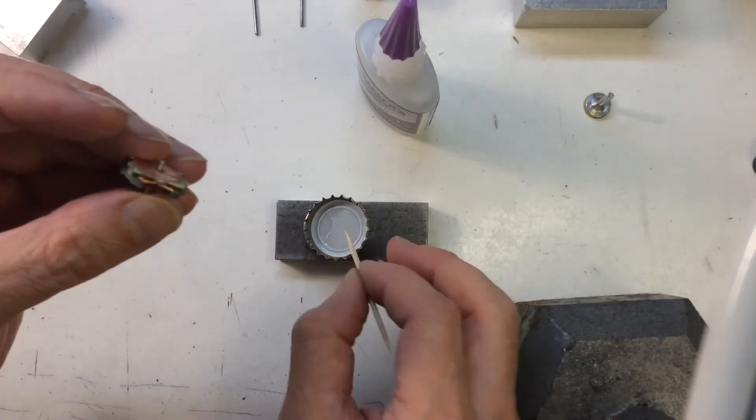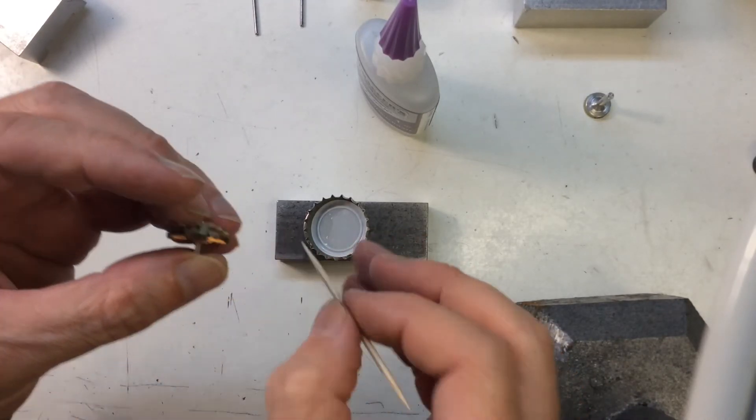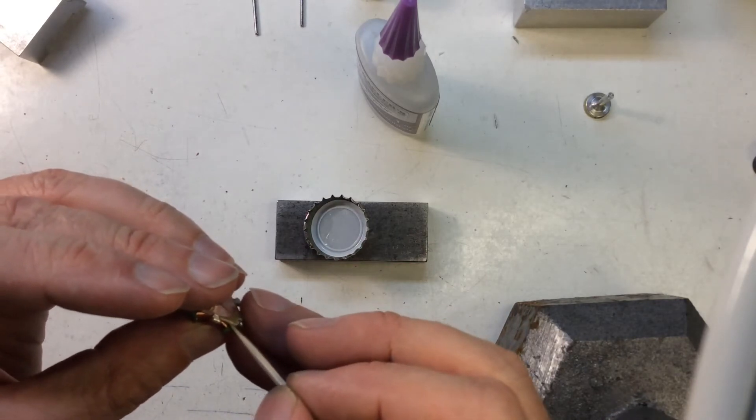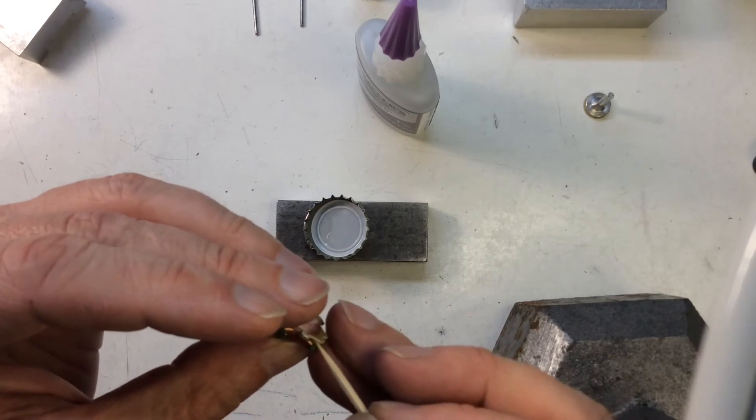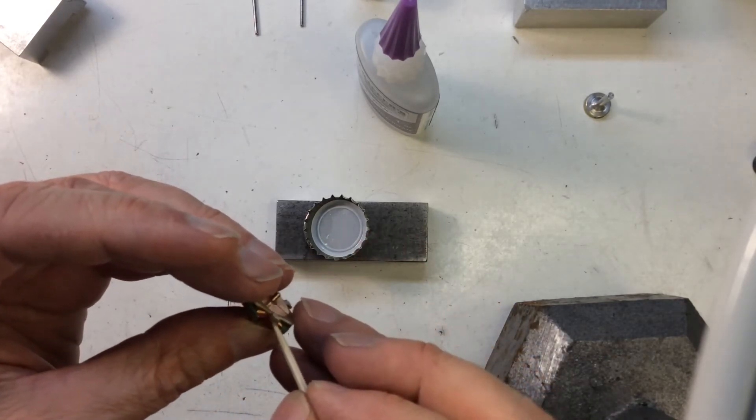Don't be shy with the glue. It soaks right into the windings. It's not like a major problem. Just don't get it all over the comm, and then you've got to sand that off. You don't want to do that, but you can get it in there nice and thick and cover all the wires.